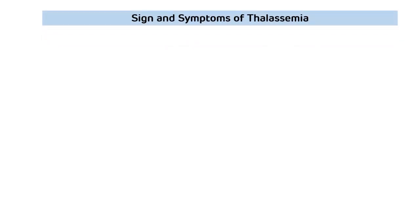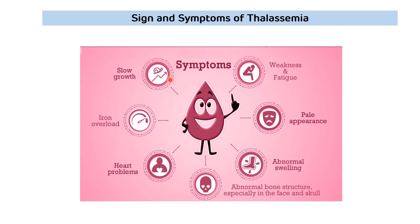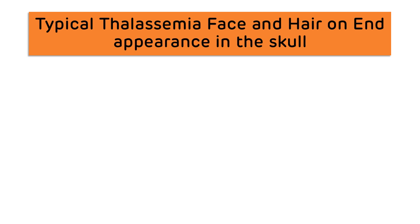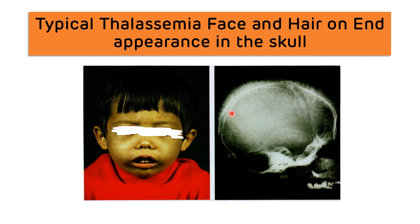Signs and symptoms of thalassemia are mainly due to anemia. There will be slow growth, weakness and fatigue, and pale appearance. There will also be iron overload, heart problems, and abnormal bone structure, especially in the face and skull, which gives characteristic thalassemia facial features. A typical thalassemia face and hair-on-end appearance in the skull X-ray are characteristic findings frequently asked in image-based questions.